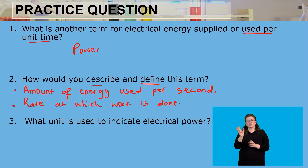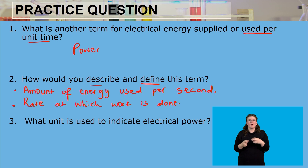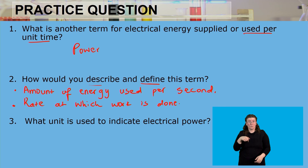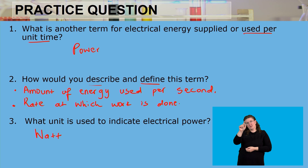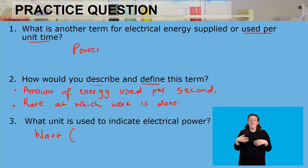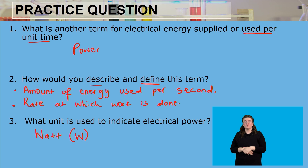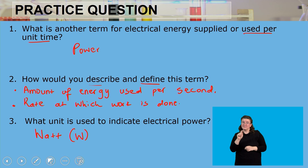Question three asks what unit is used to indicate electrical power. We know that power is measured in watts, so the unit used to indicate electrical power is the watt, denoted by the capital letter W.